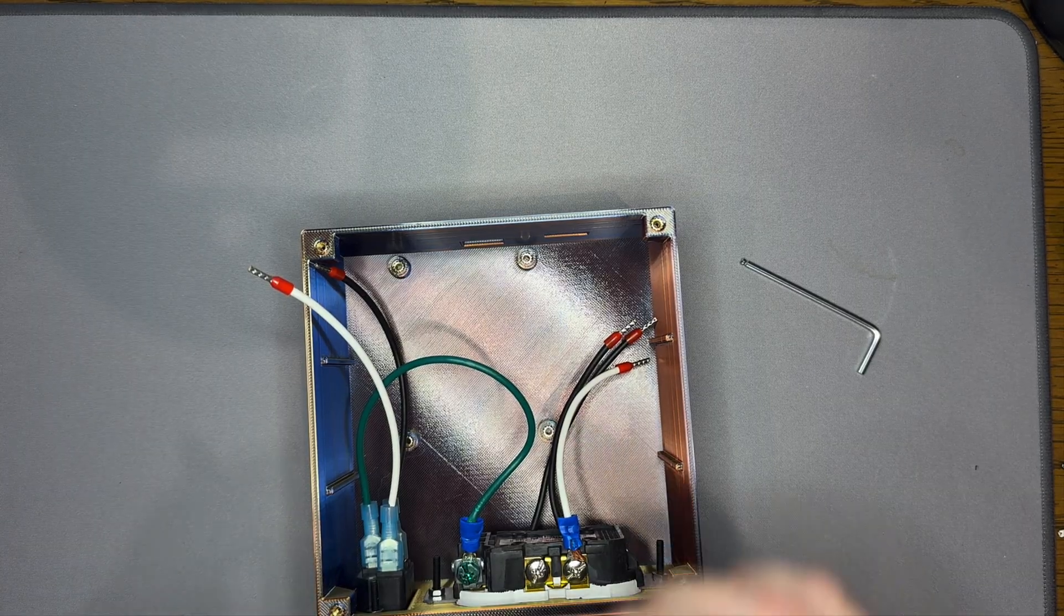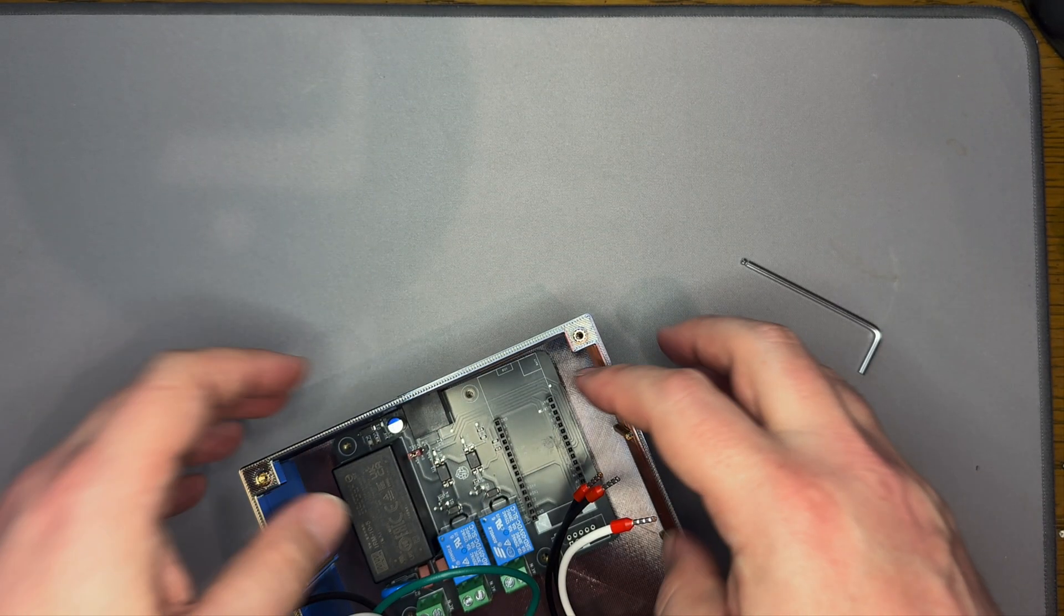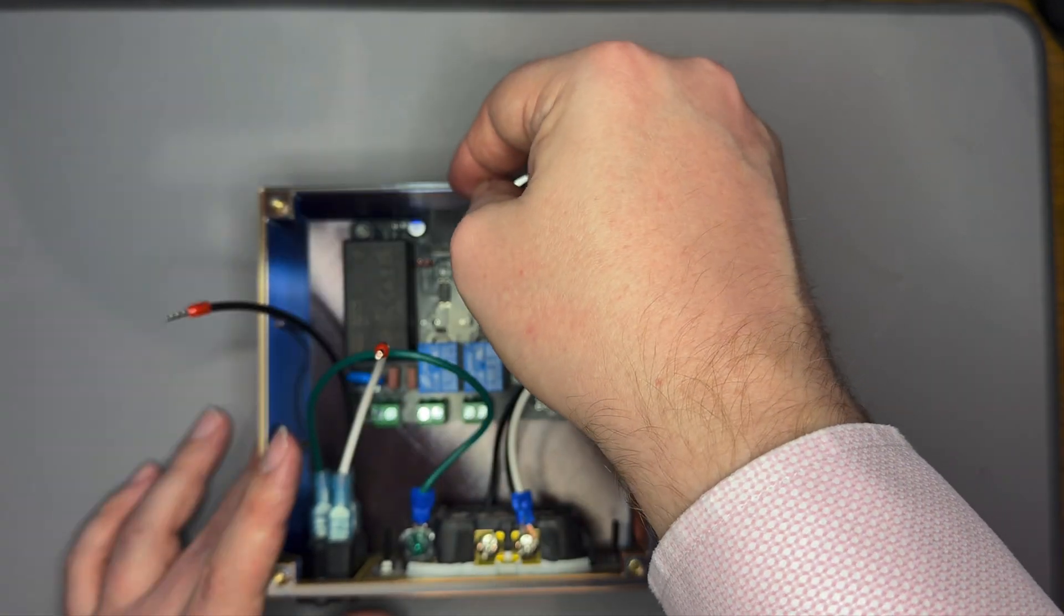With this bit of wiring complete, let's secure the PCB. Insert your PCB into the case, align with the screw holes, and secure with the M3 6mm screws.